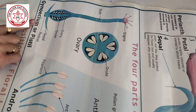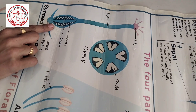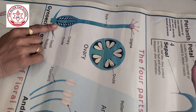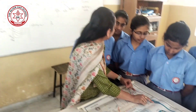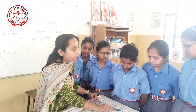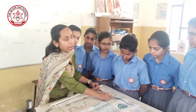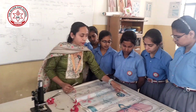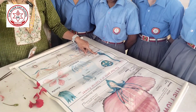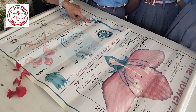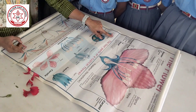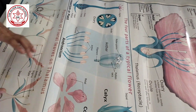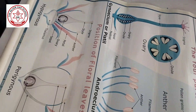In the ovary, the female gamete is present. After the fusion of the male and female gamete, fertilization takes place to form the zygote and later the embryo. The complete part — stigma, style, and ovary — together is known as pistil or carpel, and a group of pistils or carpels together is known as gynoecium.